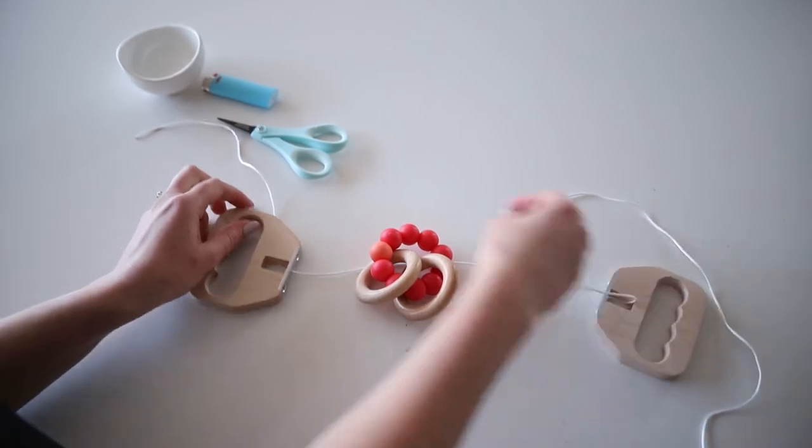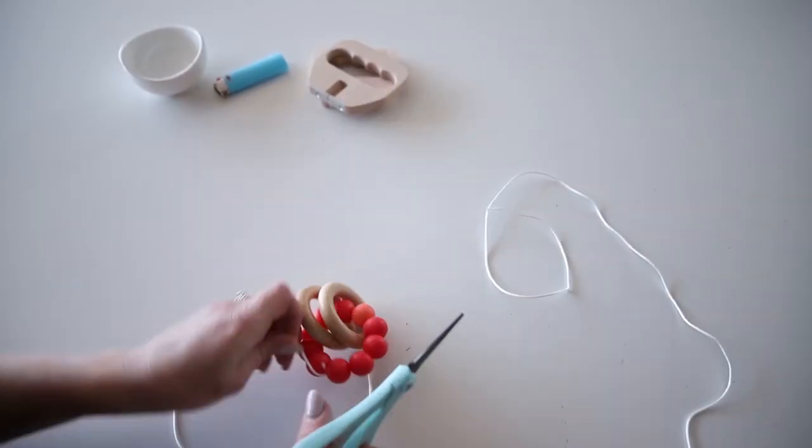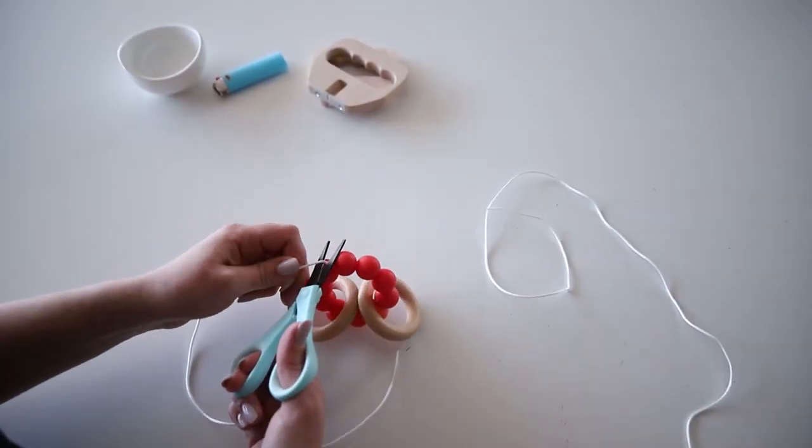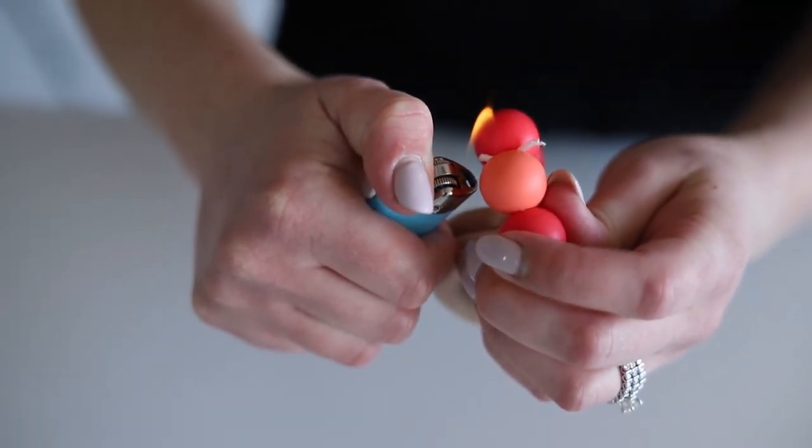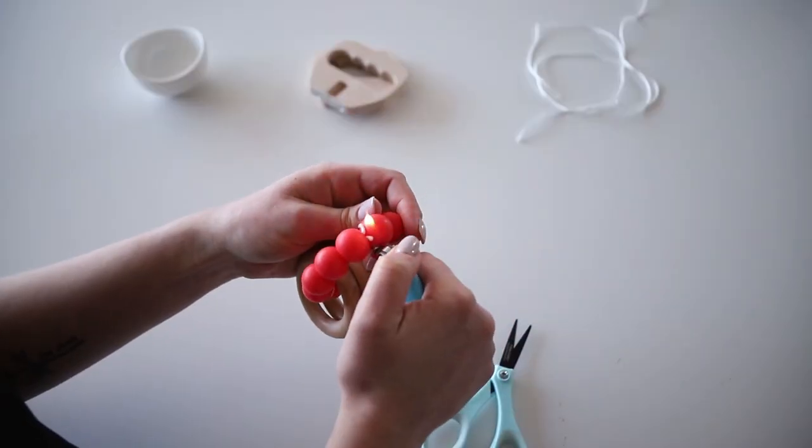Now take your scissors and cut the excess string near the knot. Slightly burn both of the snipped ends and carefully push them into the knot until hardened and firm. This will keep the knot fused together.